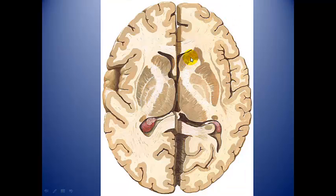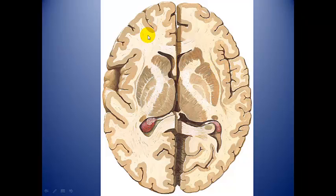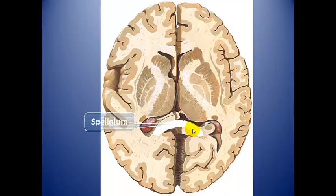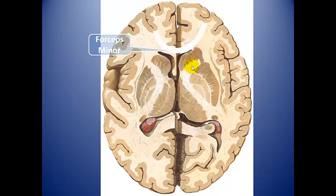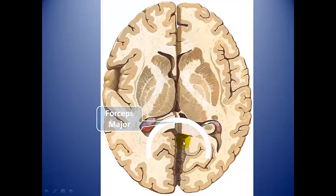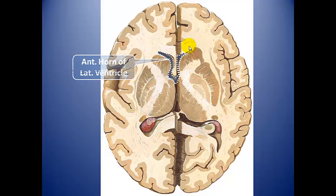Here is what the transverse section looks like. We can identify: head of caudate, putamen, external medullary lamina, globus pallidus, thalamus, anterior limb, genu, and posterior limb of the internal capsule, claustrum, external capsule, extreme capsule, insula, genu of corpus callosum, splenium of corpus callosum, forceps minor — which connects the two opposite frontal cortices — forceps major, anterior horns of the lateral ventricle, and septum pellucidum.